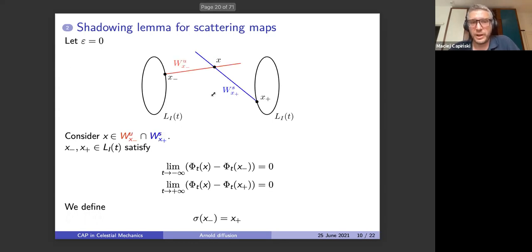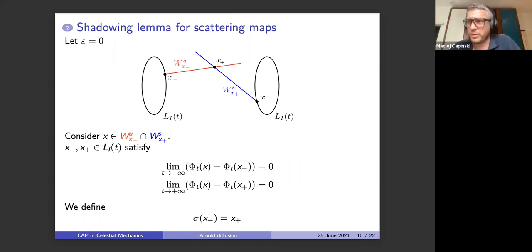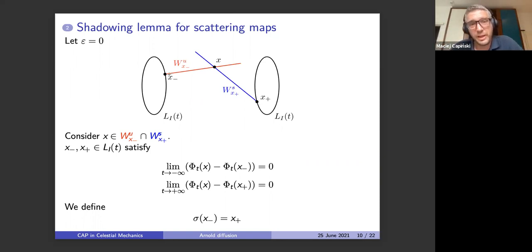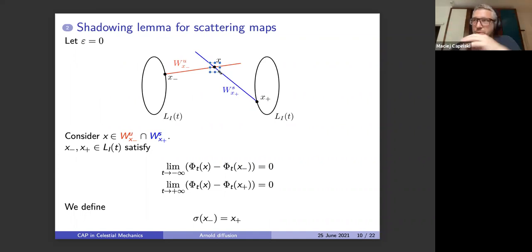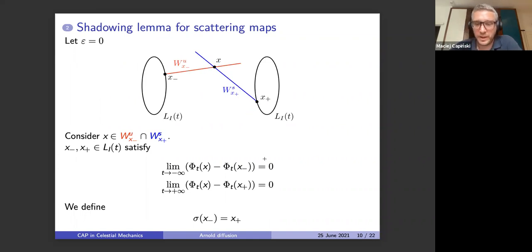This leads to the definition of the scattering map: σ(x⁻) = x⁺. The map takes this point and assigns the other point. The definition is a little involved because you pass through a single point here, but we will see why this definition is useful. For experts: using the theory of normally hyperbolic invariant manifolds, the periodic orbit can be treated as a normally hyperbolic manifold with unstable fibers going out and stable fibers going in.